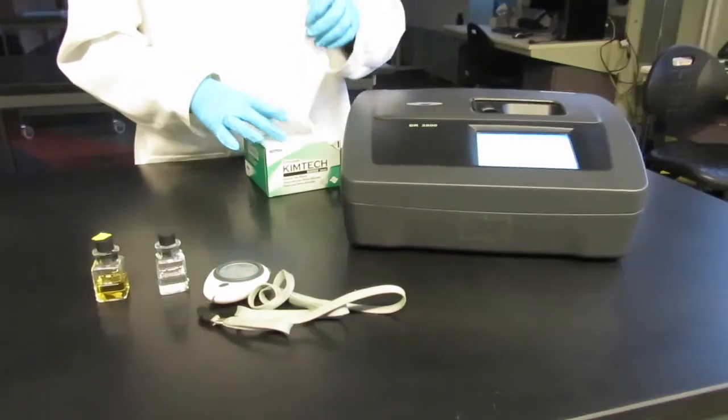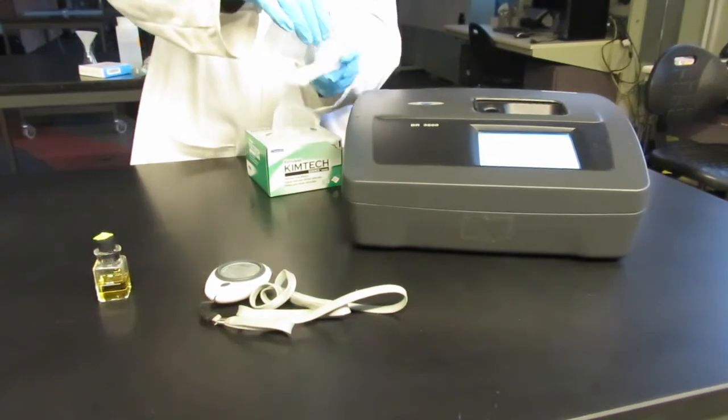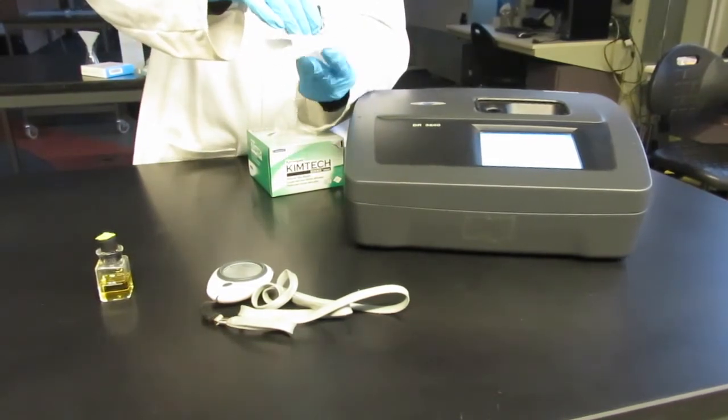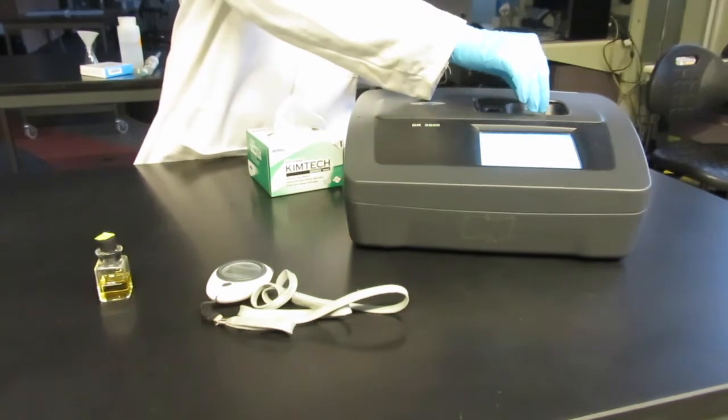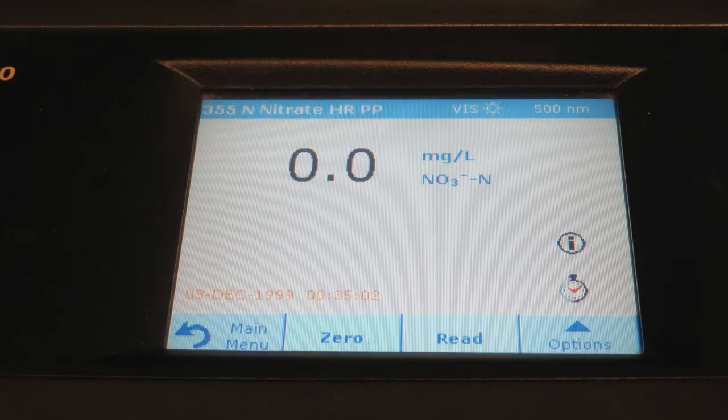After five minutes use the kimwipe to wipe your blank cuvette by holding the lip of the cuvette. Insert into the cell holder of the spectrophotometer. Place the light shield and hit zero to zero the instrument.